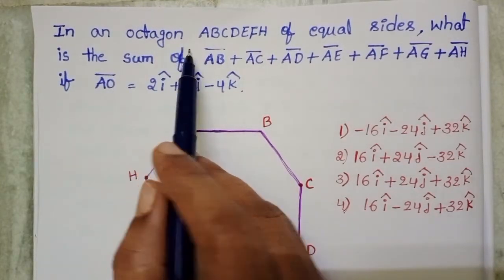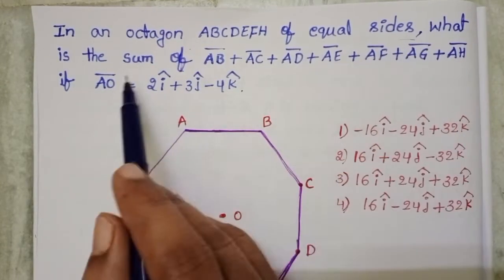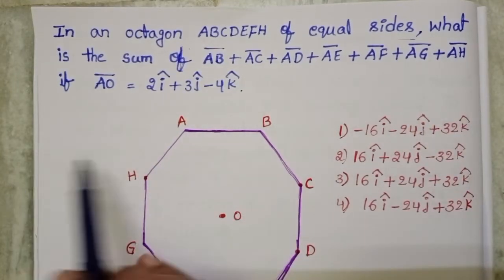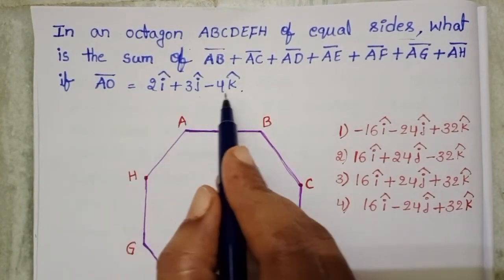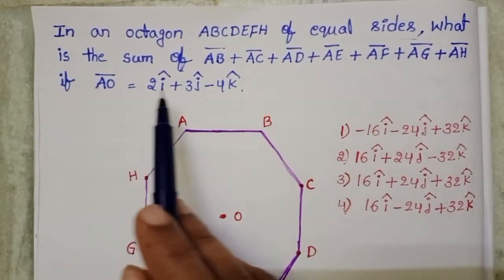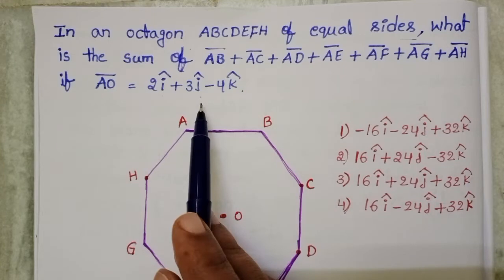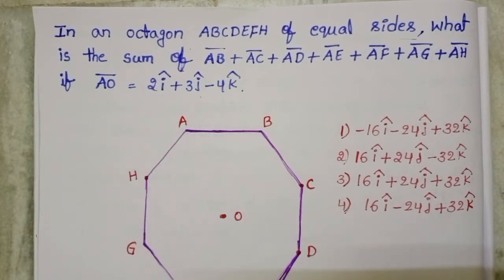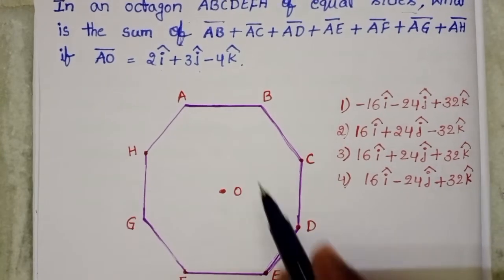In an octagon of equal size, what is the sum of the given vectors? AO bar equals 2i cap plus 3j cap minus 4k cap. Here AO bar is given in i, j, k components. It is very clear to us the given octagon is a three-dimensional figure.